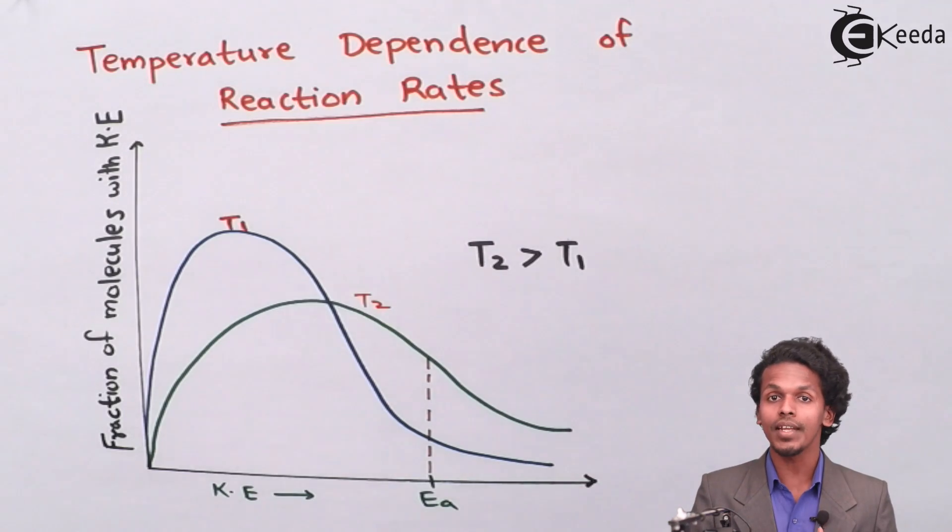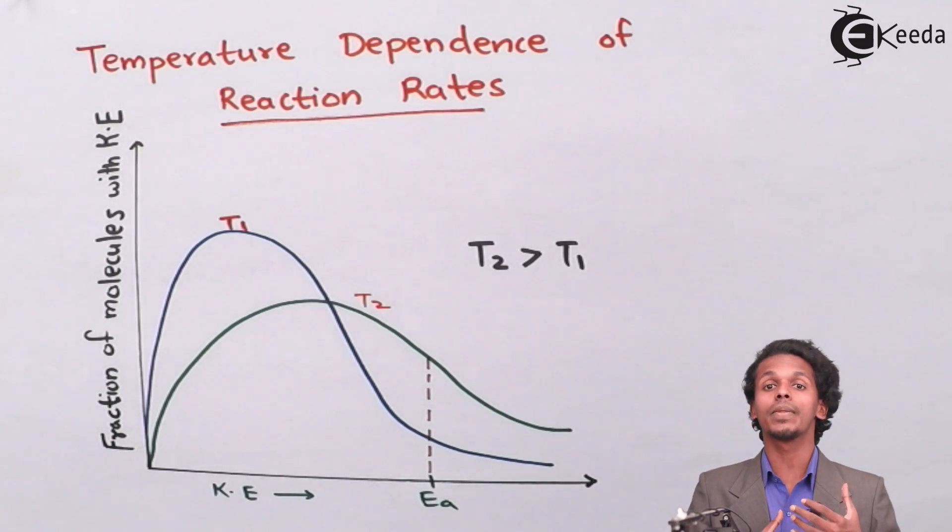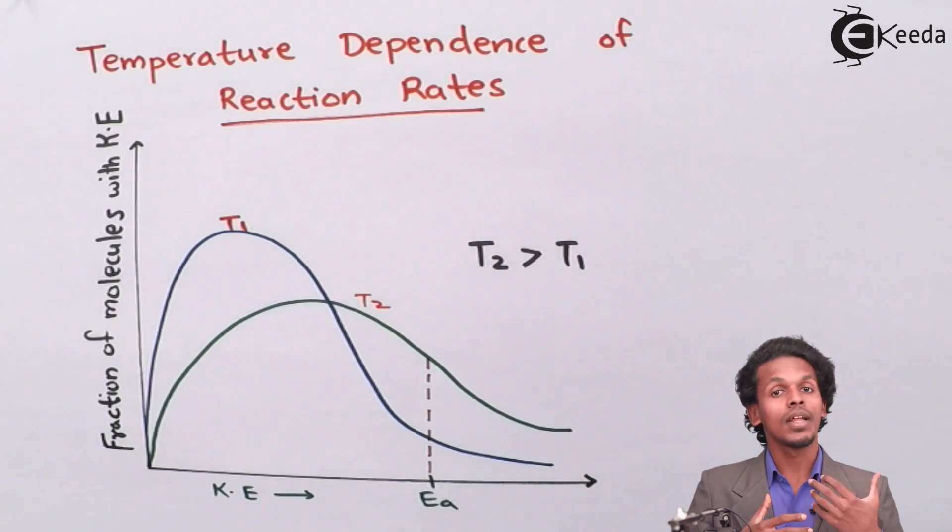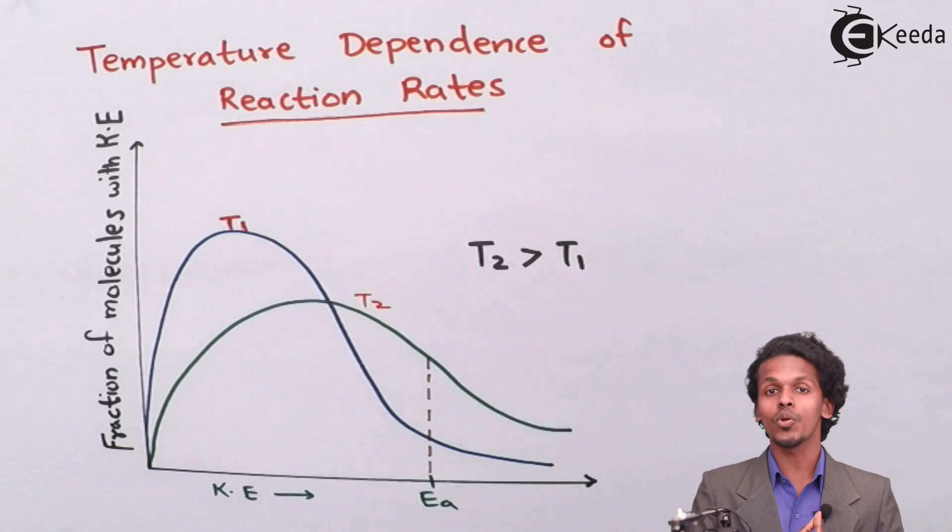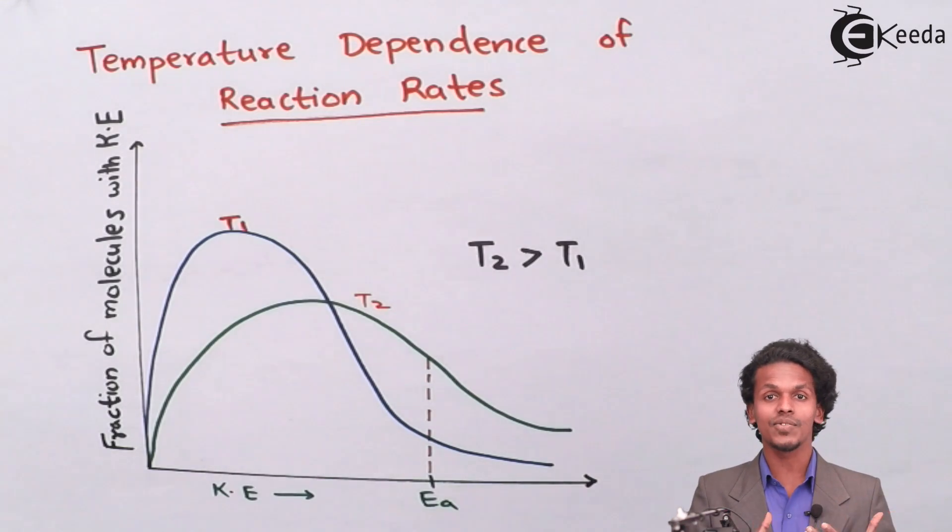More the temperature, more will be the collision. And more will be the collision means more will be the kinetic energy. More amount of the reactant molecules will possess kinetic energy and hence we could get a product.